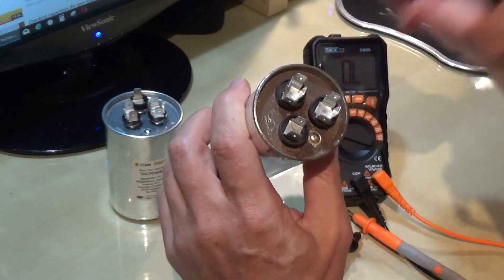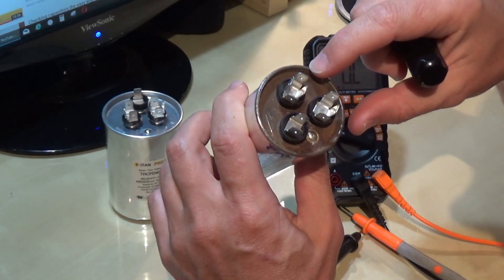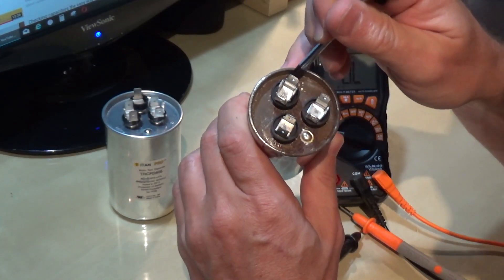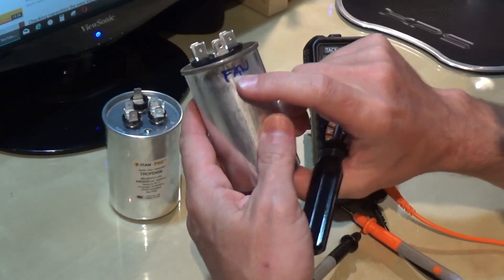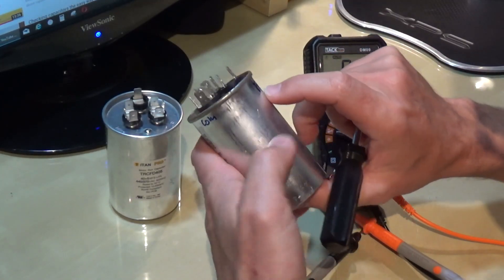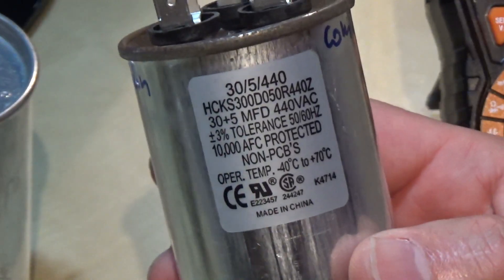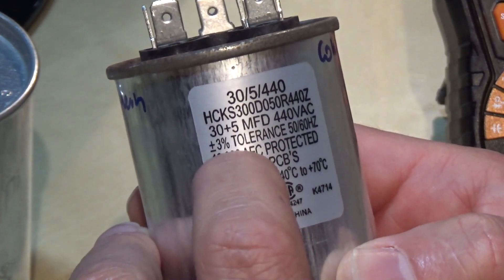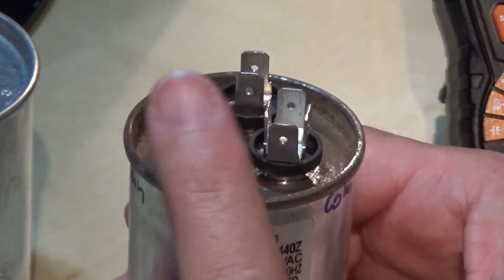This capacitor is really rusty, so it's hard to tell what is what. Use sandpaper to scrape the rust on top of the capacitor. I've already marked it with marker: this is fan, this is common, this is herm. This capacitor is a dual capacitor, so it has 30 microfarads and 5 microfarads on different sides.